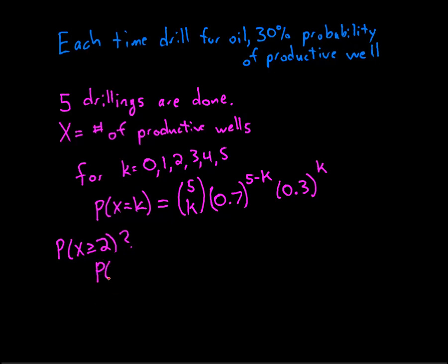Well, the probability that my random variable is greater than or equal to two is the sum from k equals 2 to 5 of five choose k, 0.7 to the power of five minus k times 0.3 to the power of k.